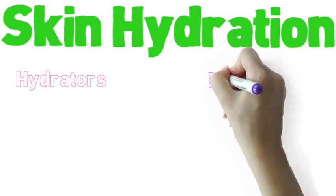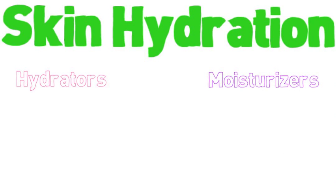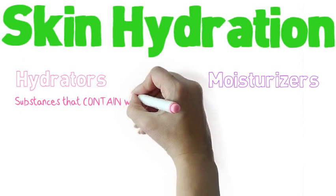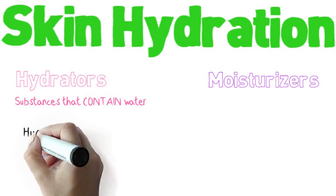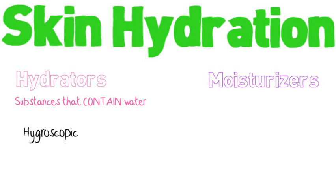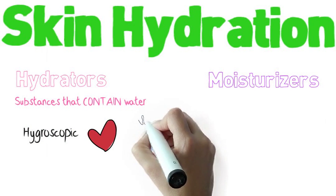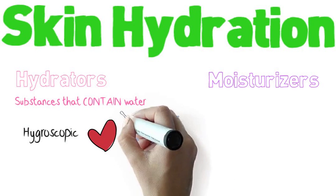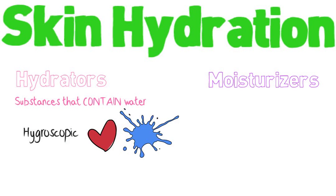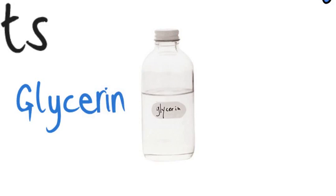In your day and night creams you probably have both hydrators and moisturizers. Hydrators are substances that contain water, so thanks to their hygroscopic properties they really love water and absorb it from the nearby environment, helping to increase skin hydration. These substances are also called humectants and an example is the really famous glycerin.